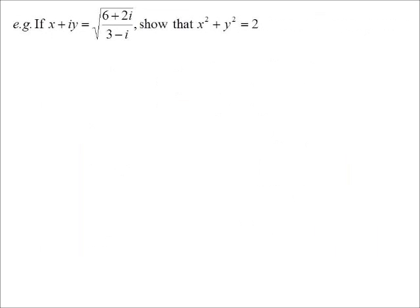Can I look at this little question? So x plus iy is the square root of (6+2i)/(3-i). Now don't worry, we don't have to work out what this square root is. We just want to show whatever it is, its real part squared plus its imaginary part squared is equal to 2.